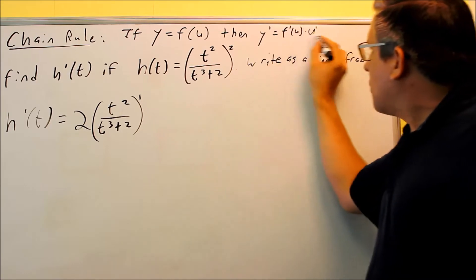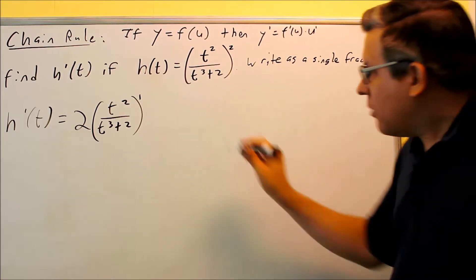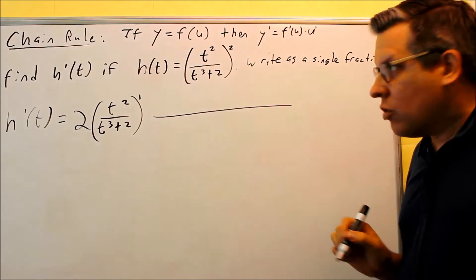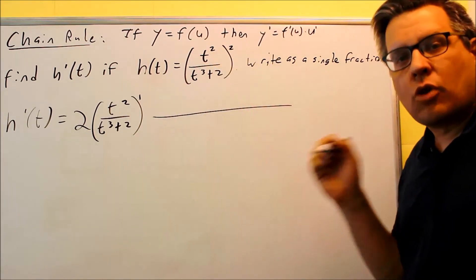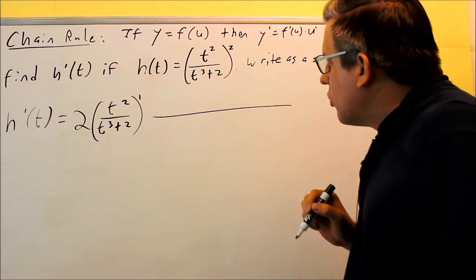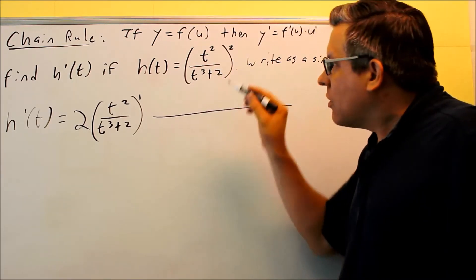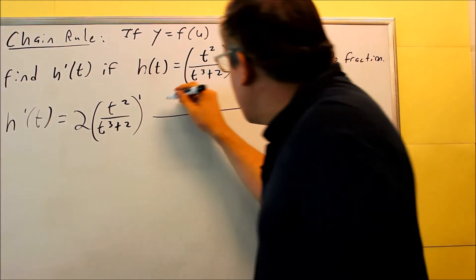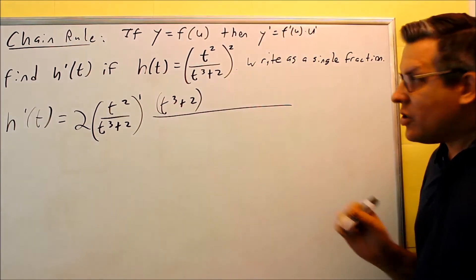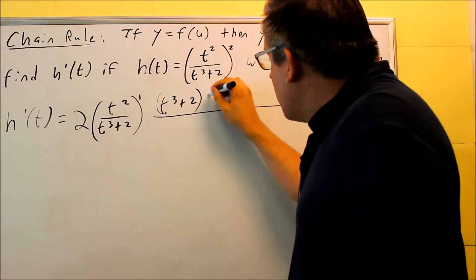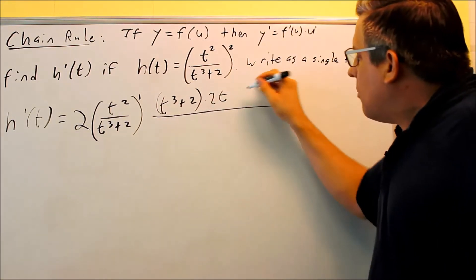Now, when I get to this part where I've got to do u prime, this involves a quotient rule. So I'm just going to work with the inside function only, and I'm going to use the quotient rule on that. The quotient rule says you've got the bottom thing times the derivative of the top. So here, let's write that out, bottom, derivative of the top. The derivative of t squared is 2t.